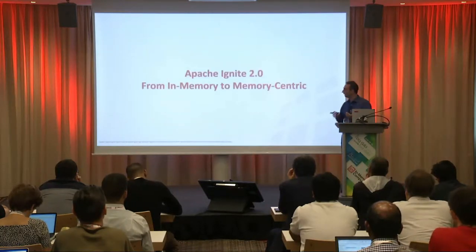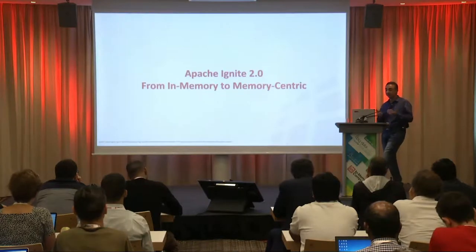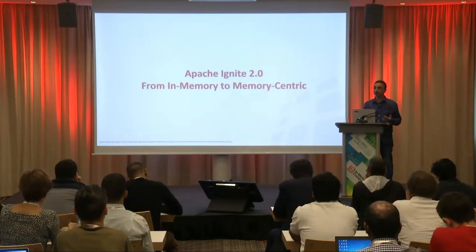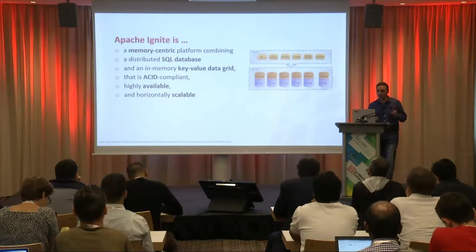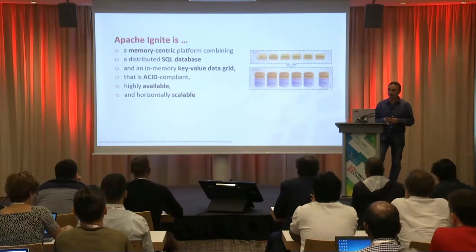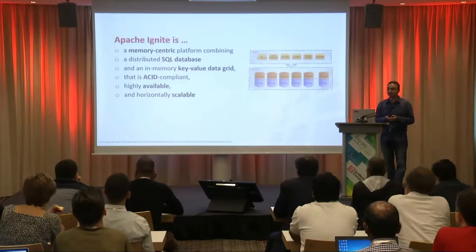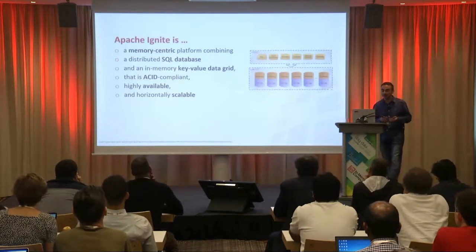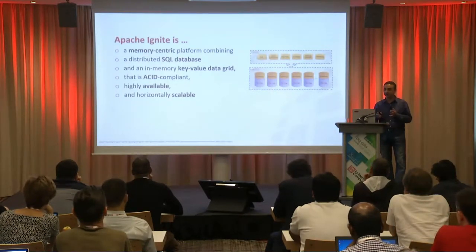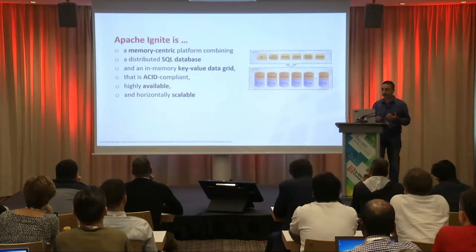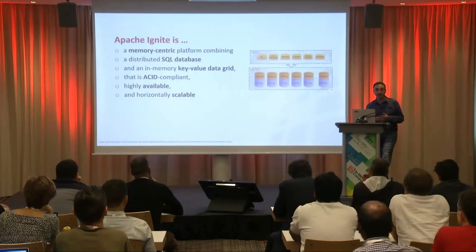In Apache Ignite 2.0 we made a shift. Apache Ignite has historically been a purely in-memory system, and we have moved to a memory-centric system. Apache Ignite is a memory-centric platform that combines two main feature sets: one is a distributed SQL database, and another is an in-memory key-value data grid. The system is ACID compliant, highly available, and horizontally scalable.